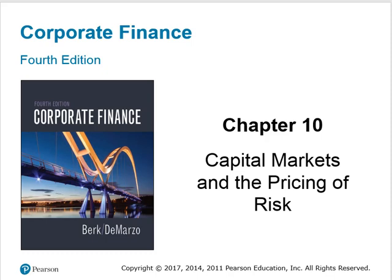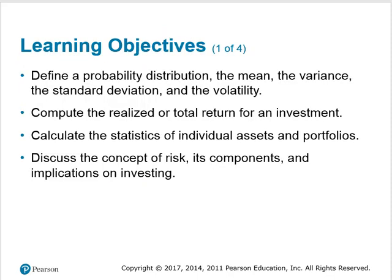In this chapter I want to talk about capital markets and the pricing of risk. Essentially what we want to do is talk about the concept of risk and look at what the markets are currently doing relative to pricing — that is, if you were investing in risky things, how do you get paid and how do we determine what that level should be? We're going to talk about calculating returns, calculating statistics of both individual assets and portfolios, and discuss the concept of risk, its components, and how it could ultimately affect our investing decisions.